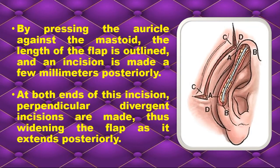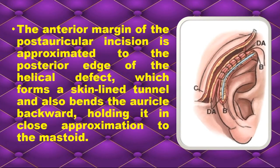The first step of marking the flap starts by pressing the auricle against the mastoid. The length of the flap is outlined, and an incision is made a few millimeters posteriorly. At both ends of this incision, perpendicular divergent incisions are made, thus widening the flap as it extends posteriorly. The anterior margin of the posterior incision is approximated to the posterior edge of the helical defect, which forms a skin-lined tunnel, and also bends the auricle backward, holding it in close approximation to the mastoid.